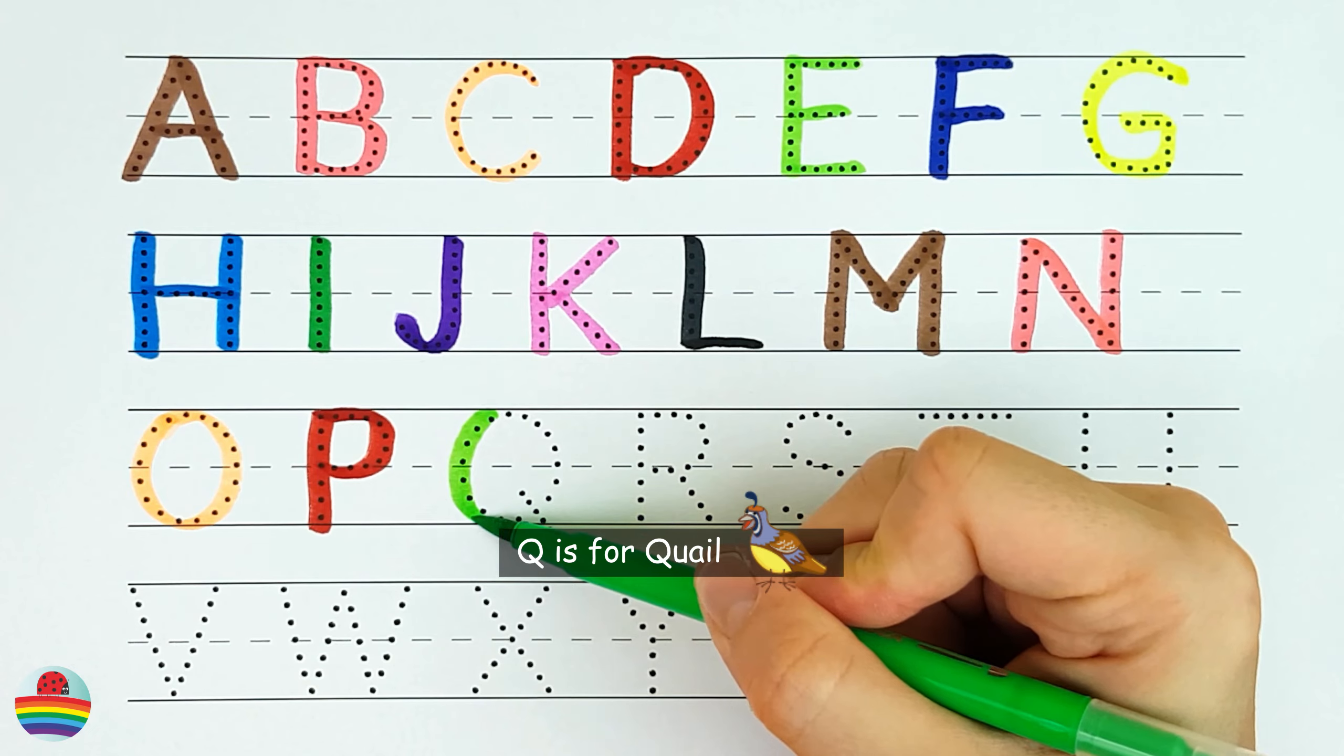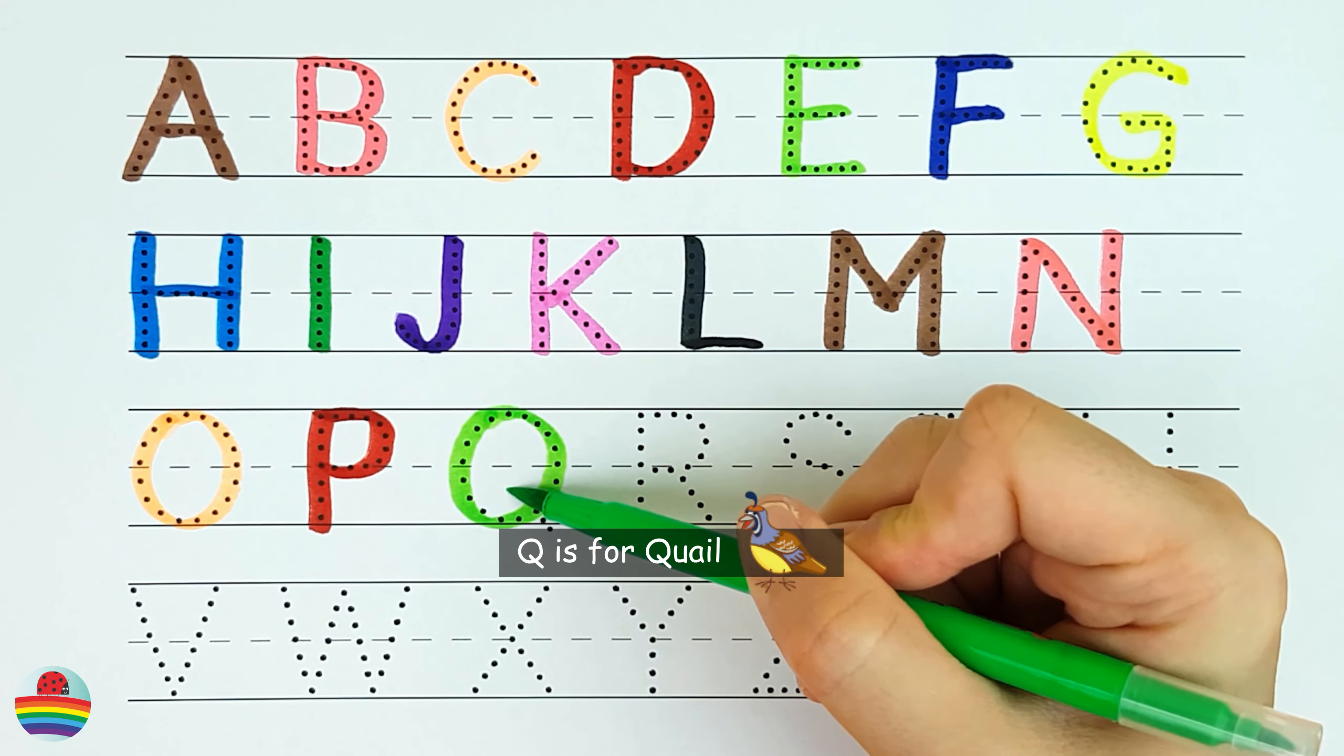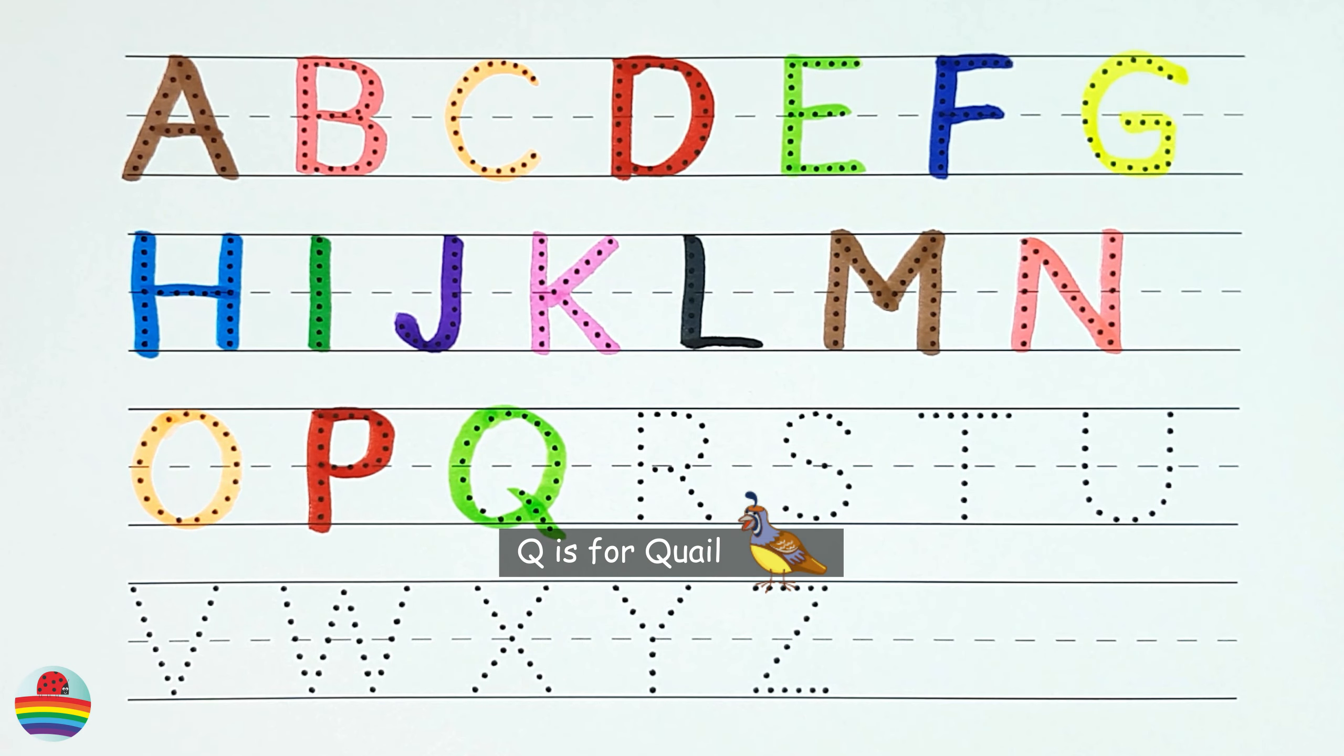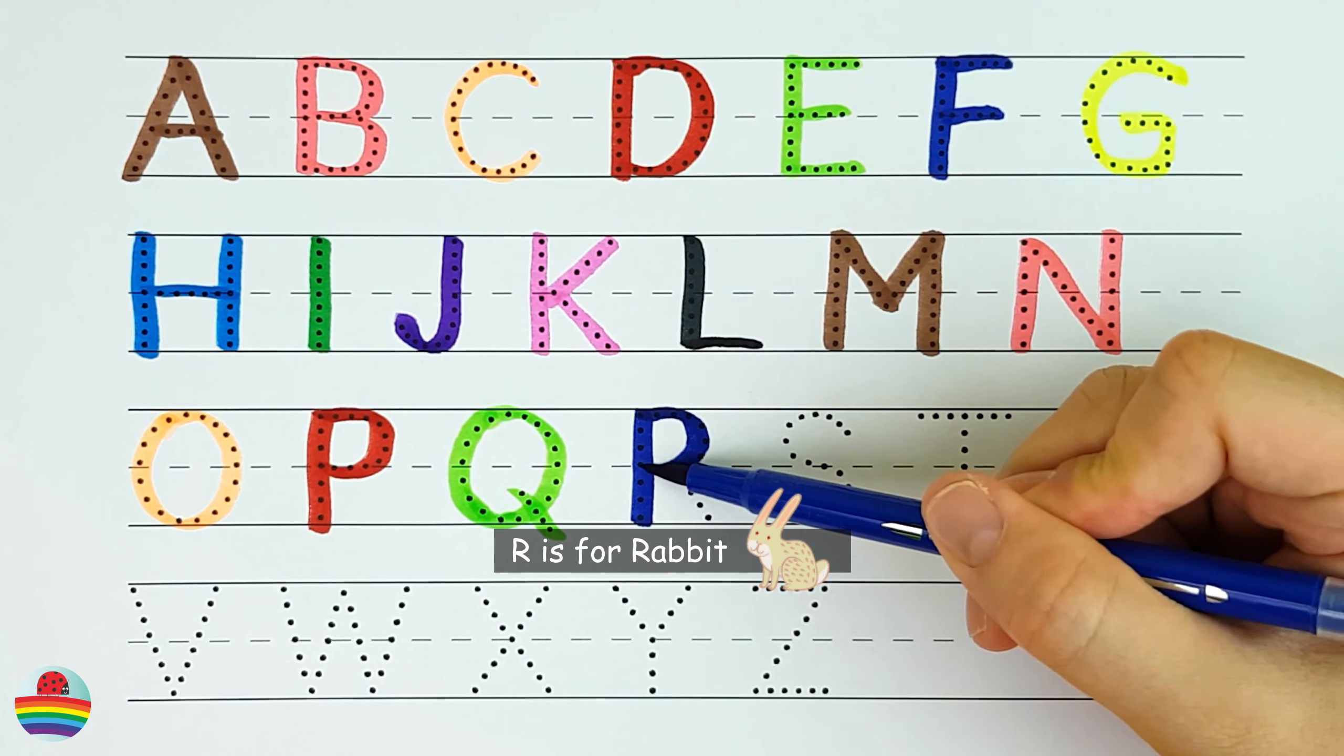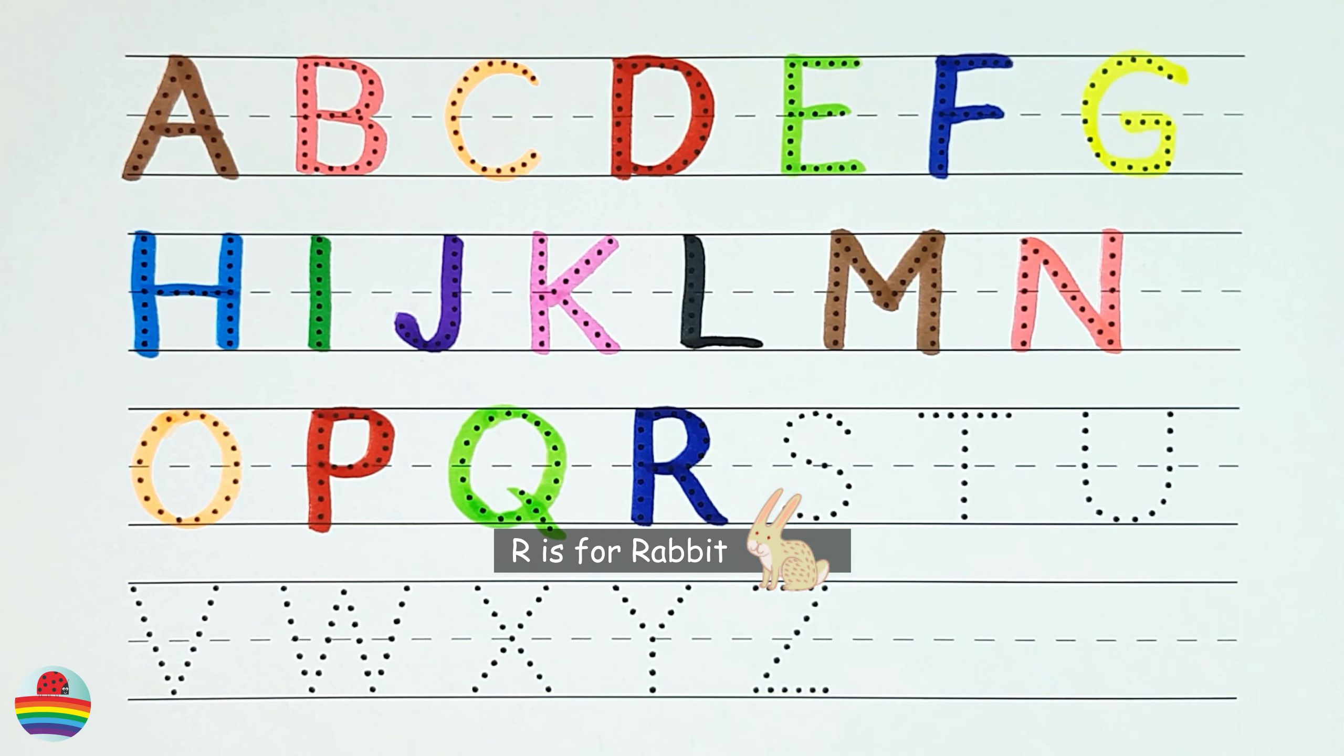Q. Q is for quail. Q. R. R is for rabbit. R.